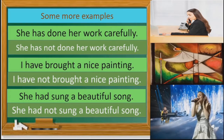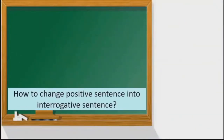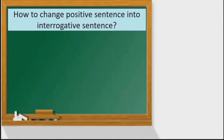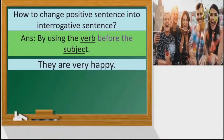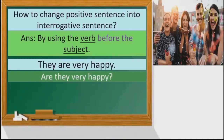So now we are going to see how to change a positive sentence into an interrogative sentence. Children, we can change a positive sentence into an interrogative sentence by placing the verb before the subject. So let us see with an example: 'They are very happy' becomes 'Are they very happy?' You can see we have placed the verb before the subject, and we put a question mark at the end to make it an interrogative sentence.